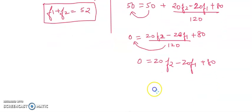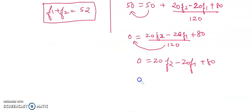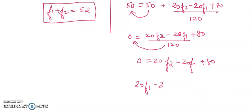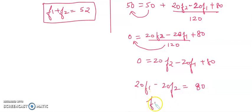Rearranging: 20F1 minus 20F2 equals 80. Dividing by 20: F1 minus F2 equals 4. So we have the second equation: F1 minus F2 equals 4.